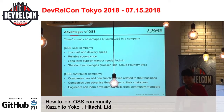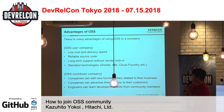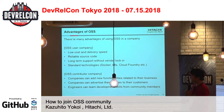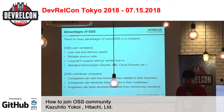The fourth is standard technologies. For example, Docker, Kubernetes, and Cloud Foundry are open source software on the internet, and these software have compatibility with other systems. So if you use open source software, the system will have compatibility and be easy to connect to other systems.